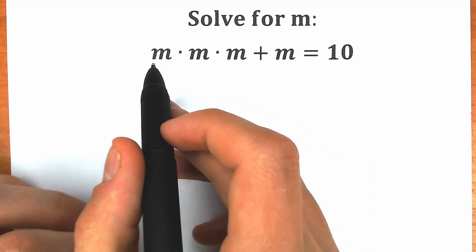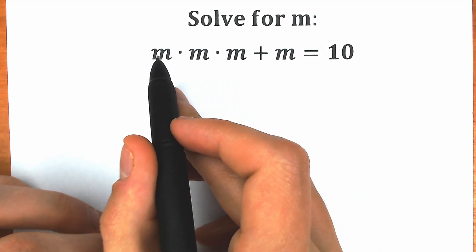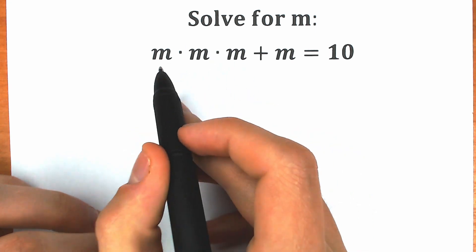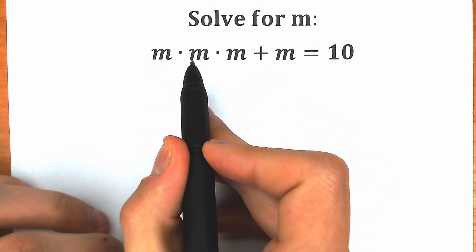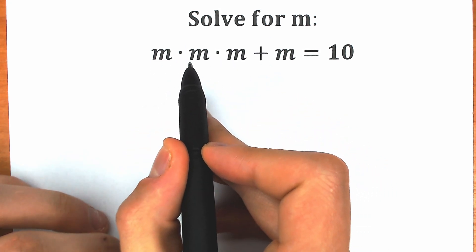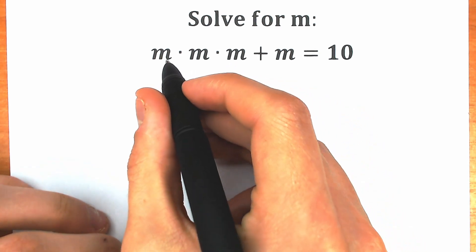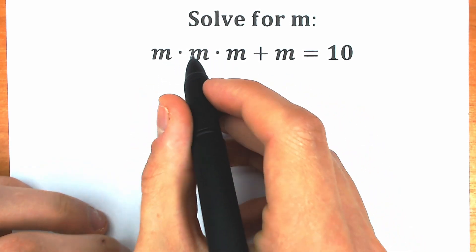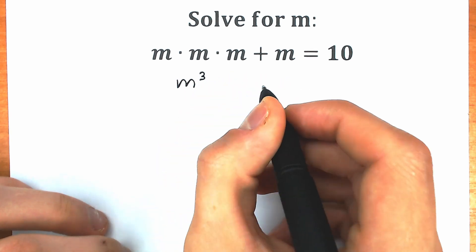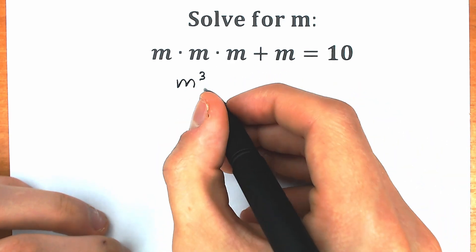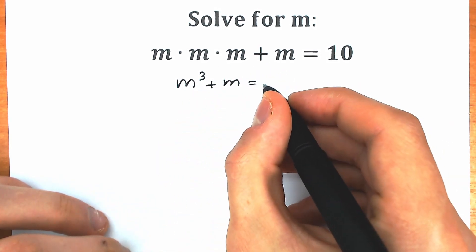First of all, don't be scared about the expression m times m times m, because a lot of students are confused by it. But if you look closely, m times m equals m squared, and m squared times m equals m cubed. So on this part of the paper we have m cubed, plus m.